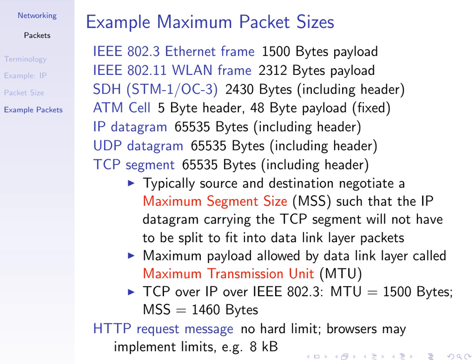In wireless LANs, the maximum size is 2312 bytes. But in practice, because most wireless LANs are connected to a wired LAN — an Ethernet network — in practice most wireless LAN frames are also limited to 1500 bytes.